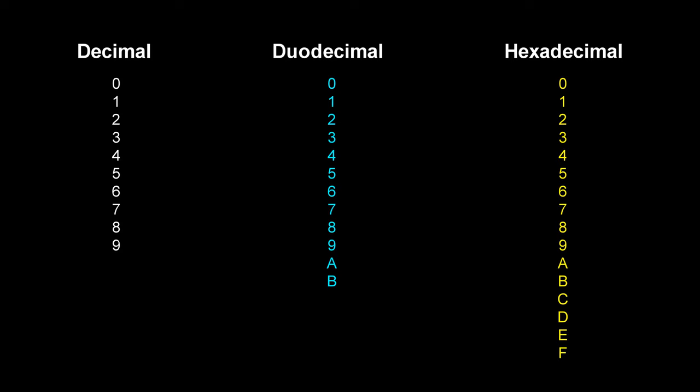The numbering system you are probably used to is called decimal and uses 10 symbols, 0 to 9. However there is actually nothing special about the number 10 — you could use any number you want as a base. We probably only use it because we have 10 fingers.